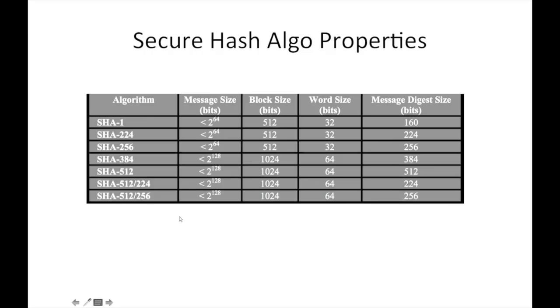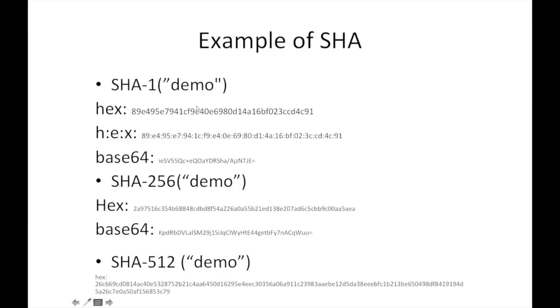For example, if we calculate SHA-1 for clear text demo, this is the hex value. It's a 160-bit output, and this is the base64 output. For SHA-256 demo, this is the hex value, and for SHA-512, this is the hex value, the long string.